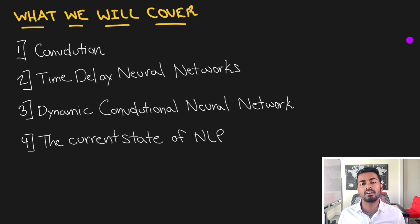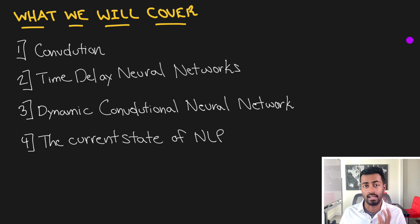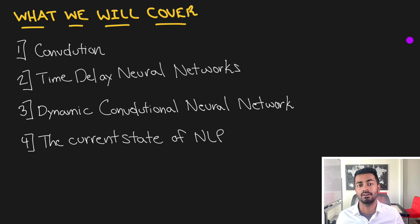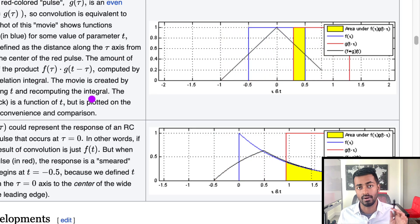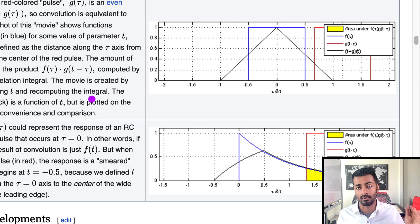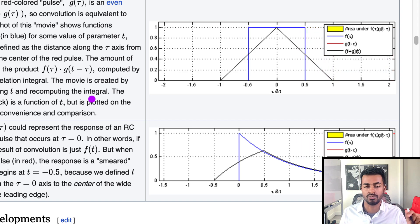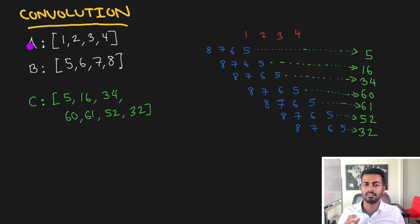Hello everyone. In this video we're going to talk about how convolution is used in natural language processing — and yes, it's used in more than just computer vision. Convolution is the application of one function onto another function in order to get a third function, and this operation is going to be an element-wise product followed by a sum.